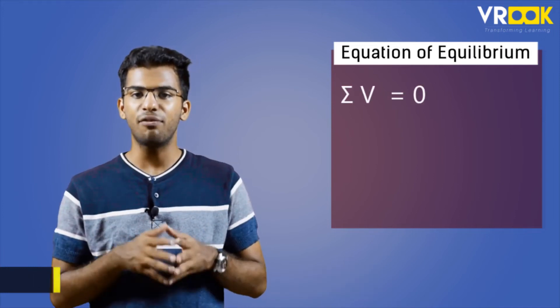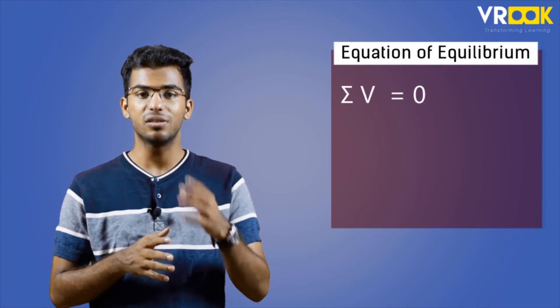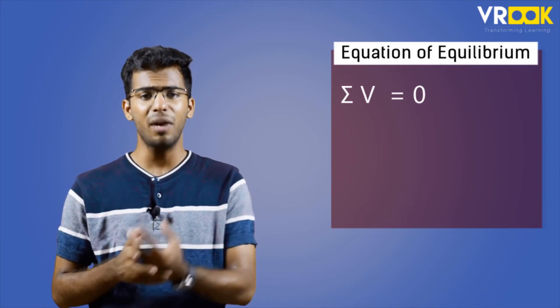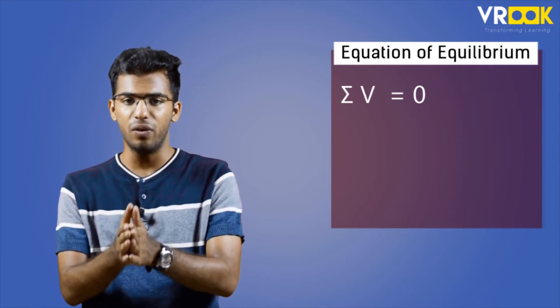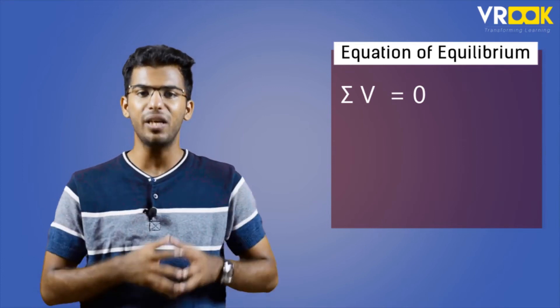The summation of vertical forces in the system should be zero. That is, sigma V equals zero, which means forces acting upwards and downwards should be equal.